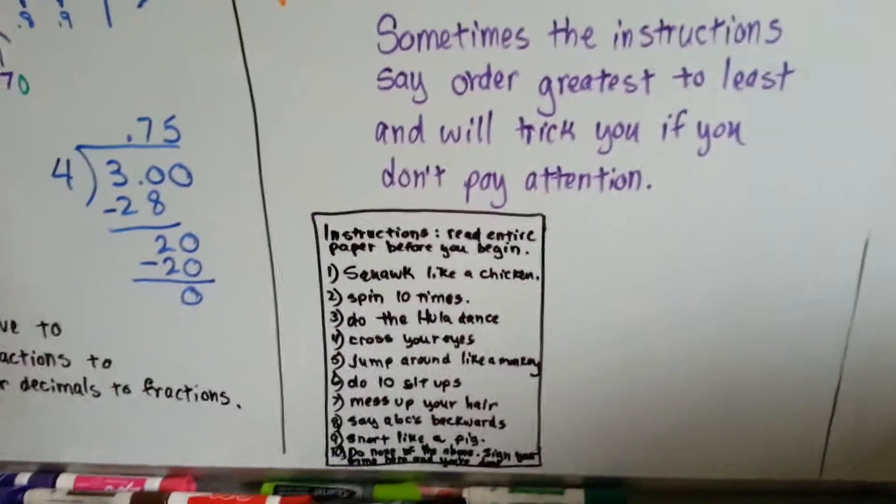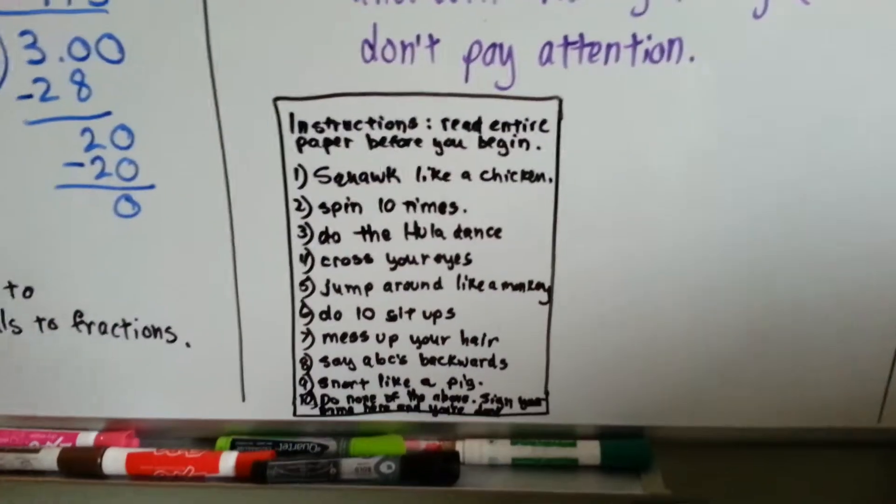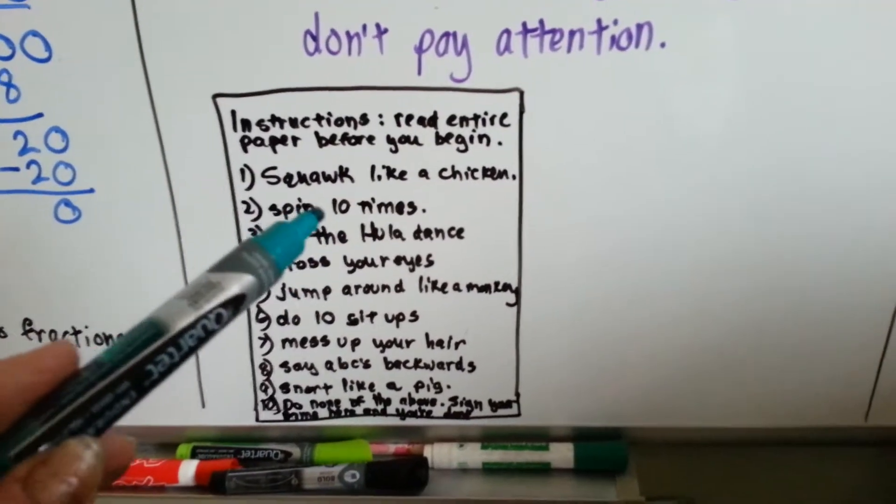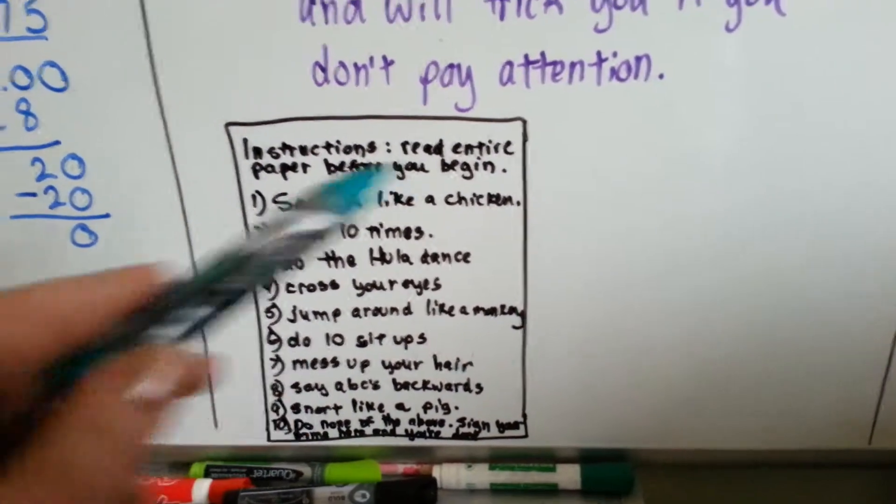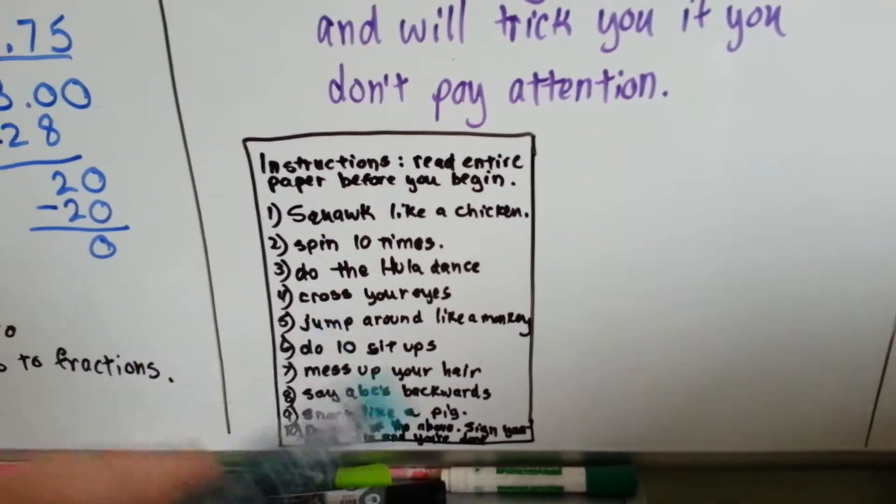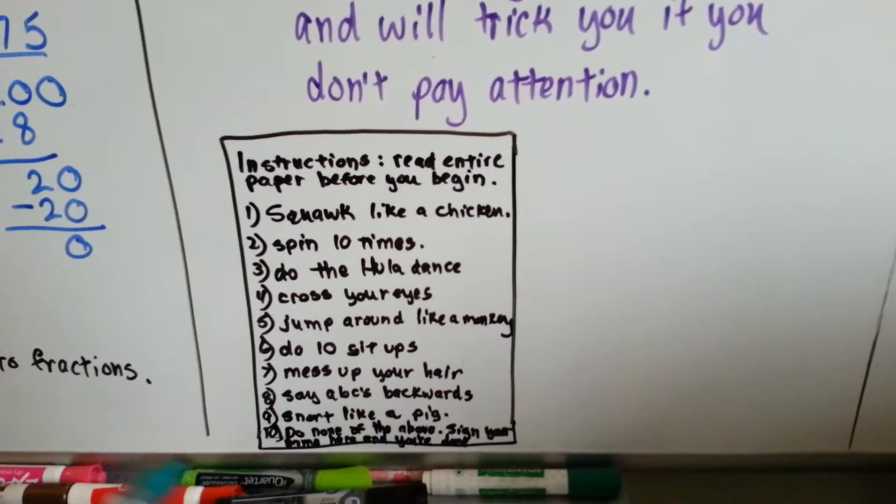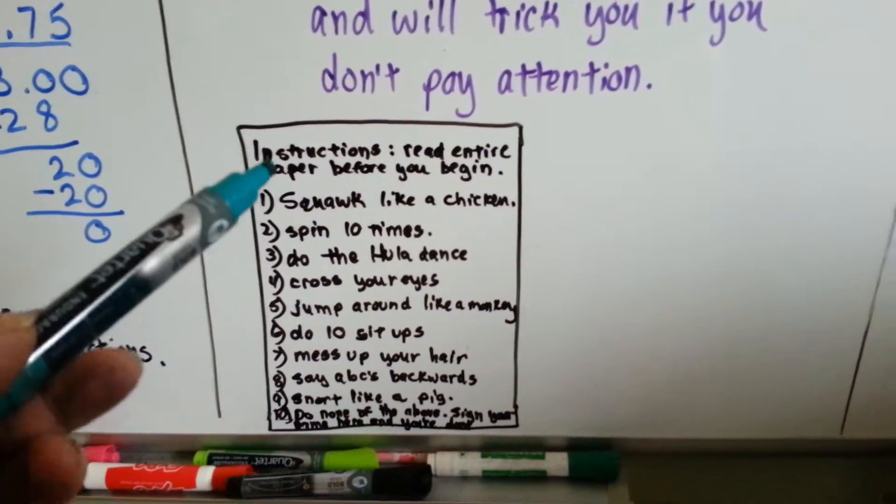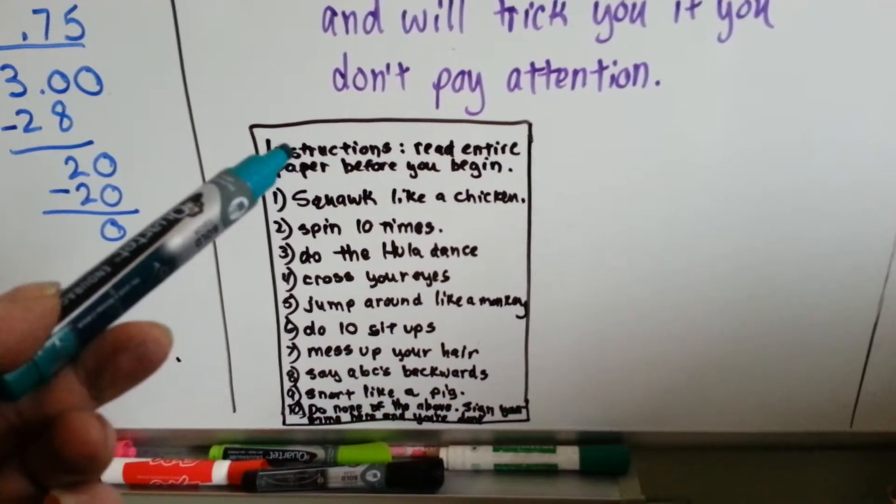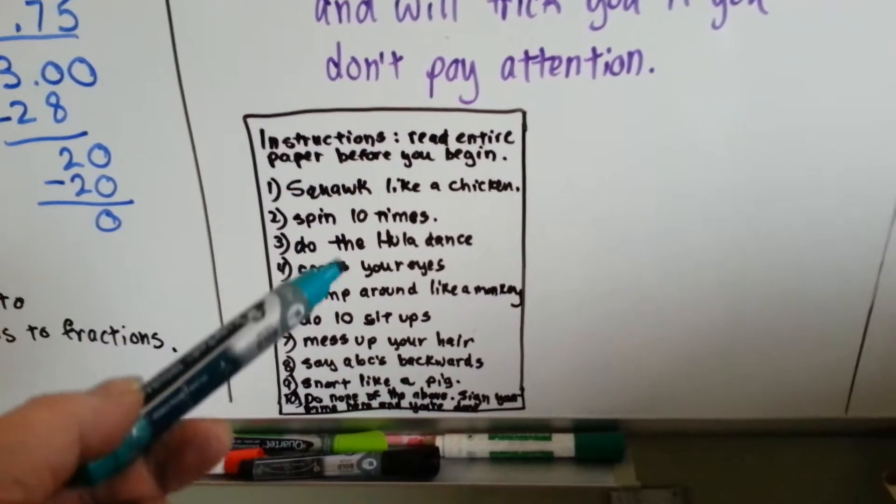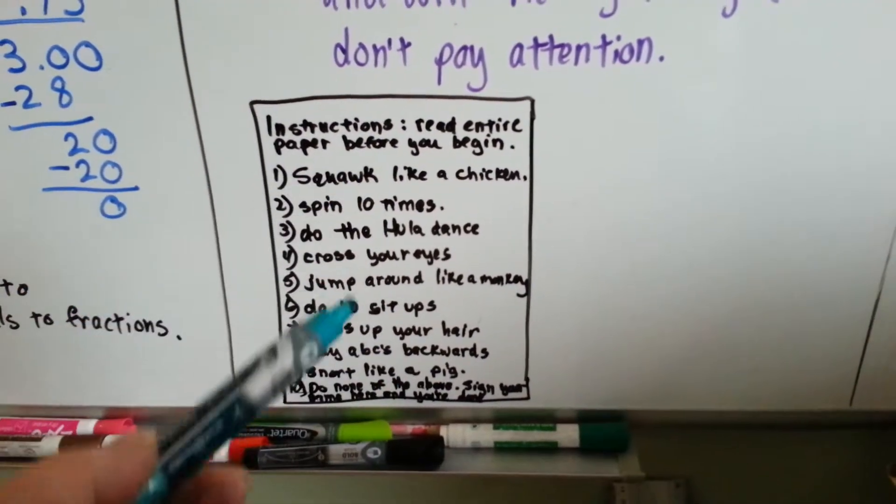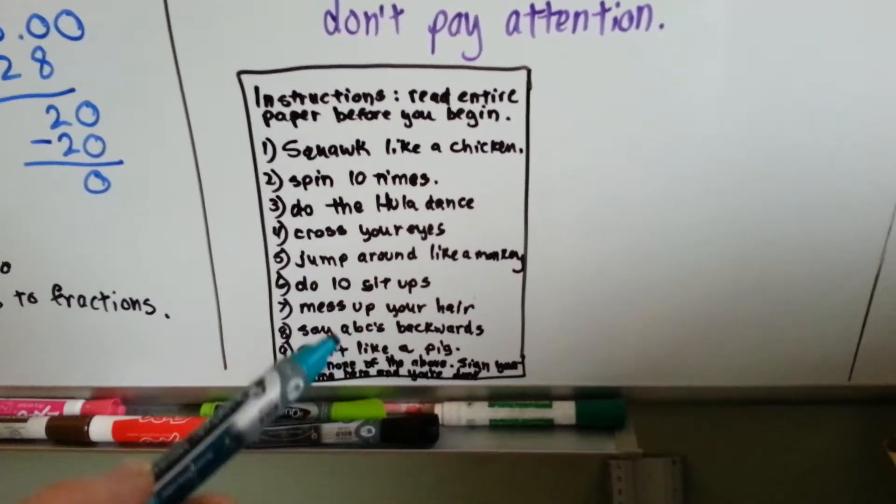I'm sure you can find this on the internet. It's pretty funny. It shows two people and they're both given a piece of paper and it'll say, do what's on this paper and you can win $100 or you'll be the winner. And the two people will get the piece of paper and one will just start reading all the things they have to do and they'll start doing. They'll start squawking like a chicken, spinning ten times, doing a hula dance, crossing their eyes, jumping around like a monkey.